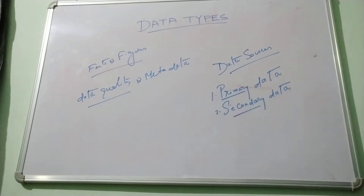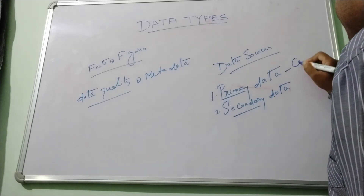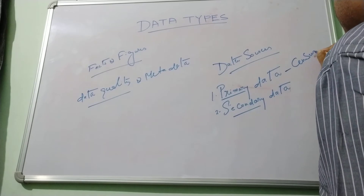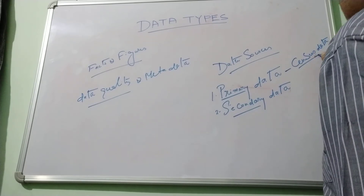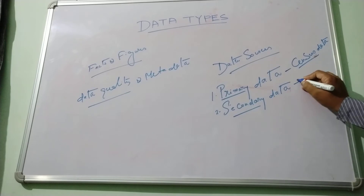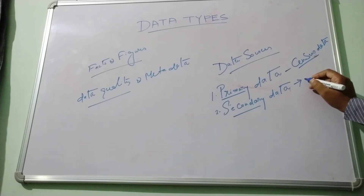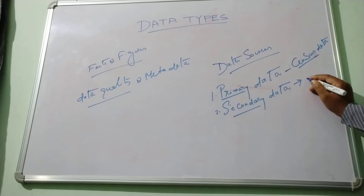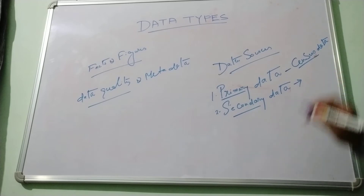Primary data refers to the data that are collected directly on a first-hand basis, like census data. Primary data is collected for the first time, so these are not used by another person. When it is used by another person, or the data that will be collected by someone else or some third party, then it is known as secondary data.